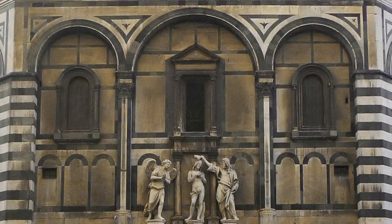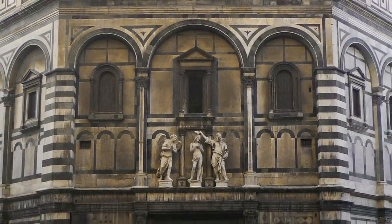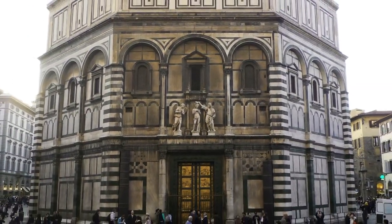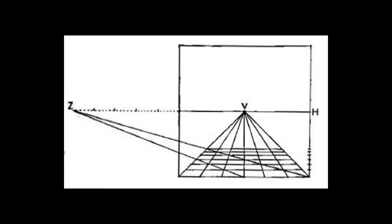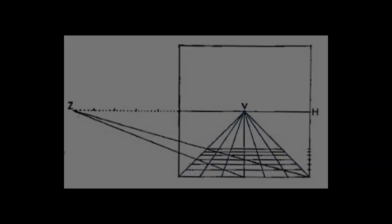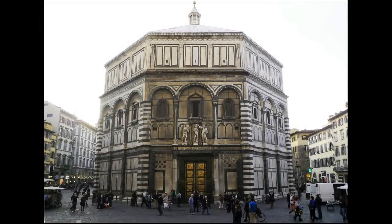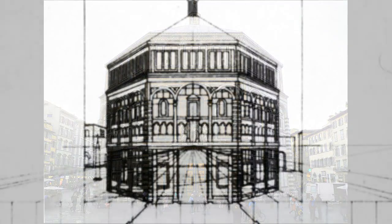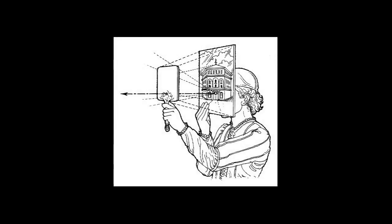Brunelleschi creates a perspectivally accurate image of the Baptistery and its surroundings. He develops a system with just a few essential elements to construct accurate scientific one-point perspective: a vanishing point at the viewer's horizon line, and a series of orthogonals, or illusionistically receding diagonals. He paints an image of the Baptistery with linear perspective and puts a small hole in the center. He takes that painting, puts a handle on it, and holds it in front of his face facing away from him. He then takes a mirror and holds it at arm's length in front of that, with the painting's hole allowing his eye to look straight through to the vanishing point.